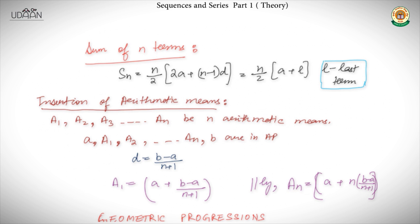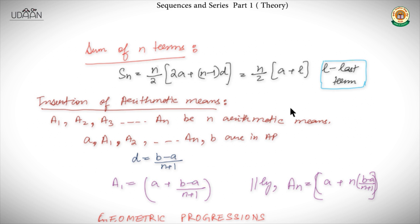After defining the nth term, we come to the sum of n terms of an arithmetic progression. If n is the number of terms, a is the first term, and d is the common difference, then Sₙ = n/2 × [2a + (n−1)d]. Since the nth term was a + (n−1)d, this formula is similar and not difficult to memorize. It can also be written as Sₙ = n/2 × (a + l), where l is the last term — useful when you know the last term but not the common difference.